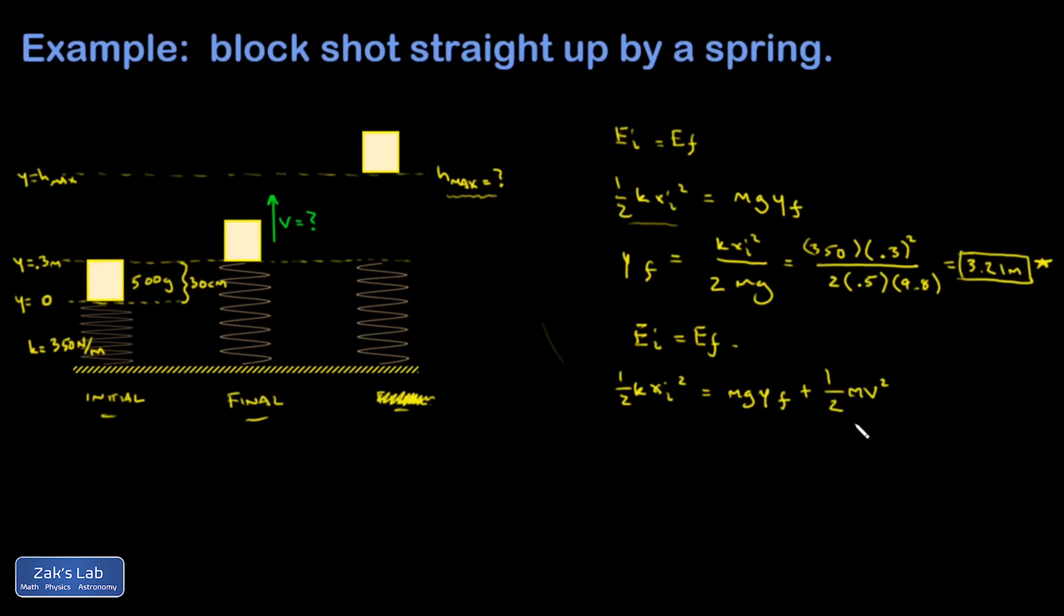And I guess if I stay symbolic for the moment, I'm going to multiply both sides by 2, and I get kx initial squared. This term becomes a 2mgy, and I'm going to subtract it. So minus 2mgy final equals mv squared. Then I'll go ahead and divide by m and square root the whole thing. So v is going to be the square root of kx initial squared minus 2mgy final over m.